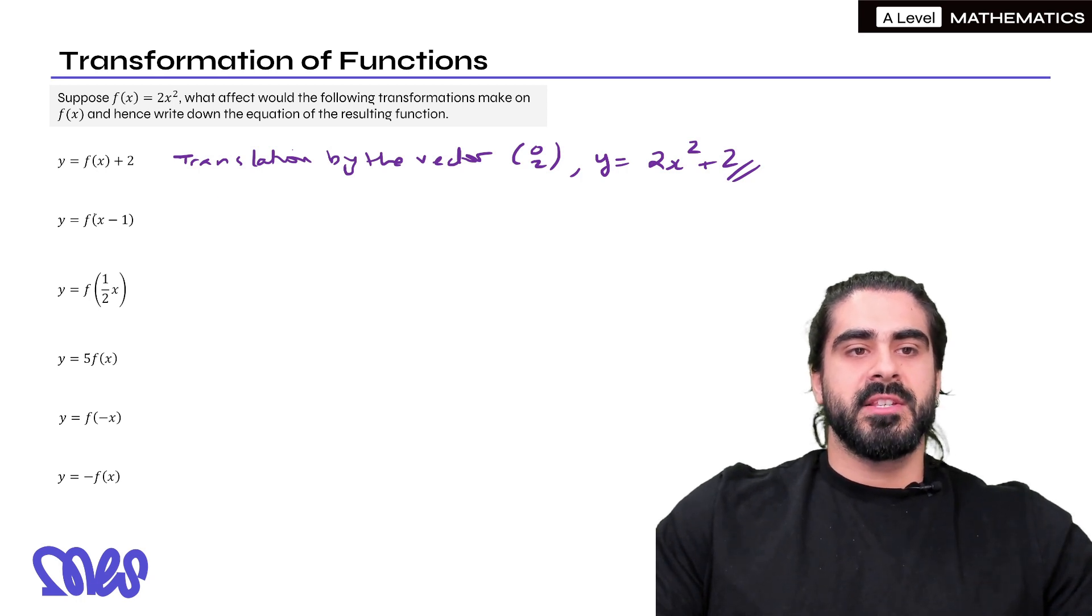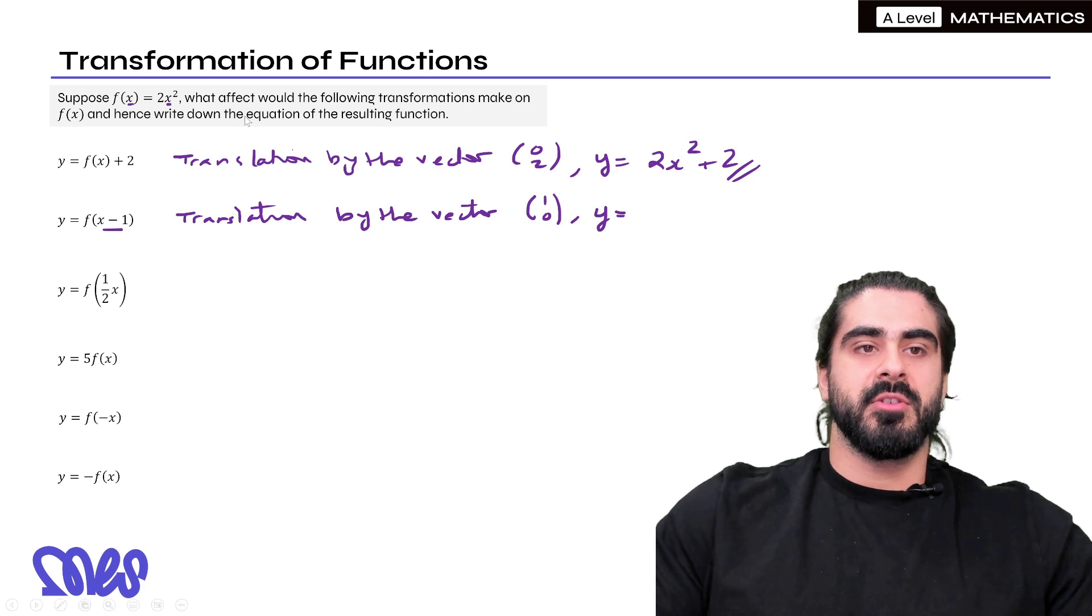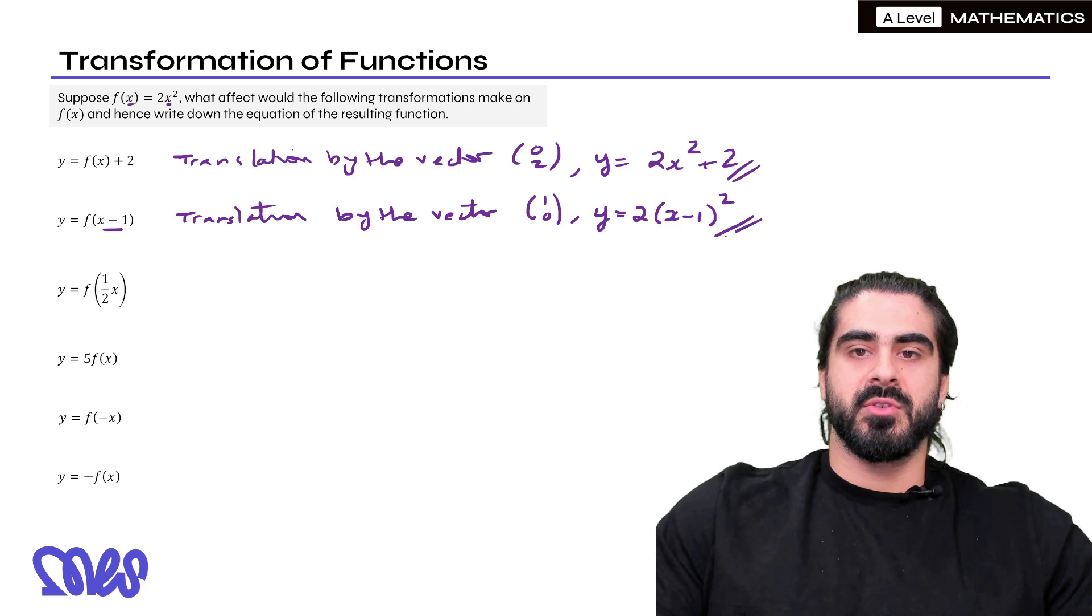f(x-1) so that's affecting the x values. x minus 1 is going to shift the graph to the right by 1. Remember when it affects the x values it does the opposite of what you think. So this will also be a translation by the vector, and here we're moving 1 to the right so it will be (1,0). Now what does this look like in terms of its equation? Well all the x values in f(x) are being replaced with x-1. This is just a recap of GCSE basically. So it will be 2(x-1)².